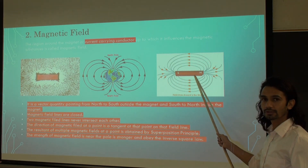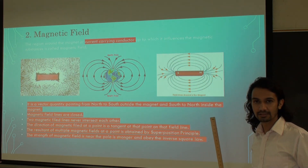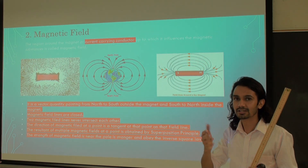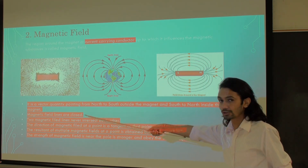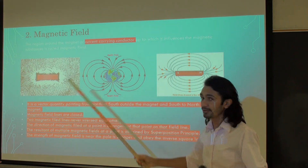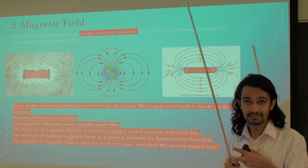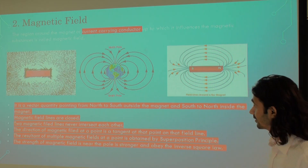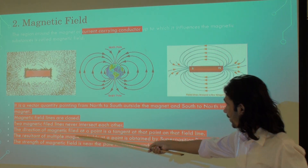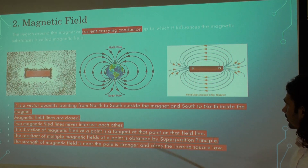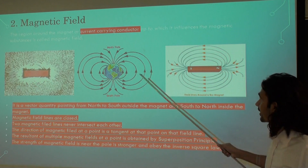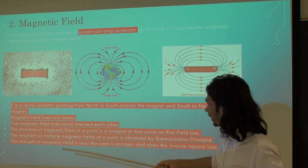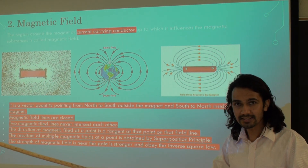We always have closed lines in a magnetic field. In contrast, in the case of an electric field around a negative charge, the field lines come toward the charge, so they are open lines — but magnetic field lines are always closed. Two magnetic field lines never intersect each other, since we cannot have two different force directions at a particular point. The direction of the magnetic field at a point is the tangent at that point on the field line.